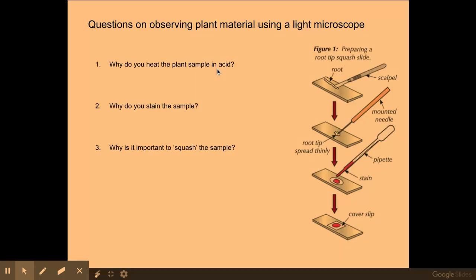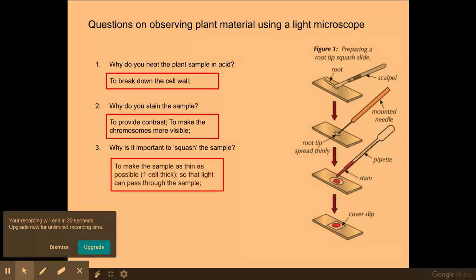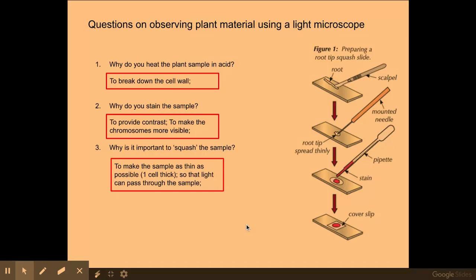We normally heat the root tip with acid first, which is used to break down the cell wall. We then squash it with a mounted needle, stain the sample, and place a cover slip over the top. We stain the sample — this is a synoptic link back to cell ultrastructure — to provide contrast and make the chromosomes more visible, as we're particularly interested in the chromosome structure. It's important to squash the sample to make it as thin as possible so that light can pass through when viewed under the light microscope.